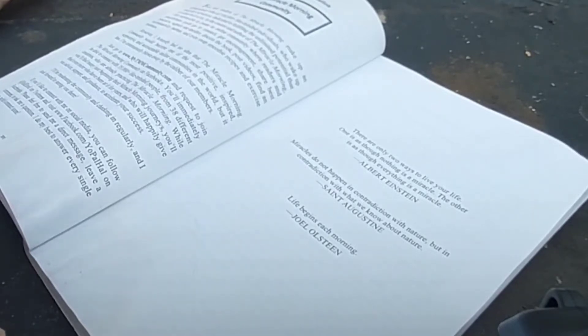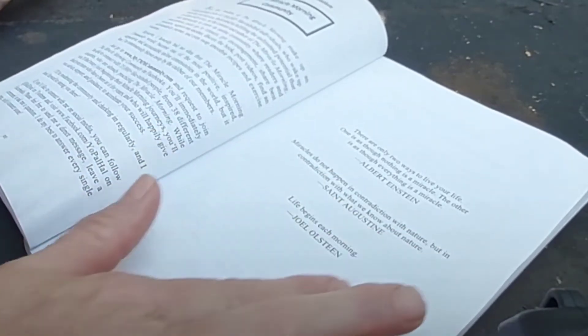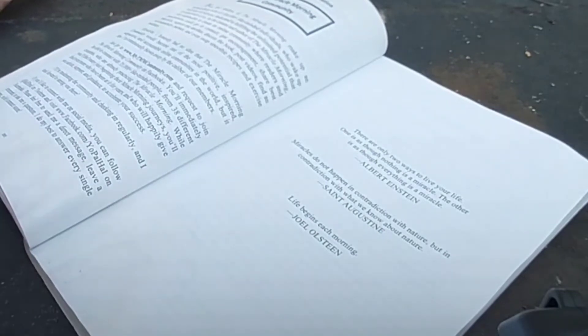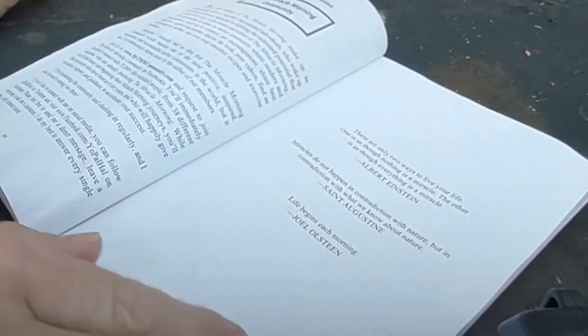There's a whole online Miracle Morning community that you can be involved in. He gives wonderful quotes here on this page. He's got one by Albert Einstein. There are only two ways to live your life. One is as though nothing is a miracle. The other is as though everything is a miracle. Albert Einstein. Miracles do not happen in contradiction with nature, but in contradiction with what we know about nature. St. Augustine. Life begins each morning. Joel Osteen. I agree with all of those.